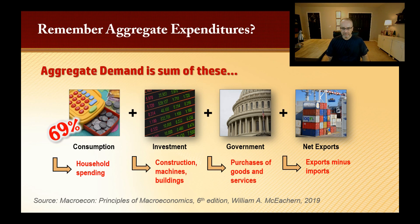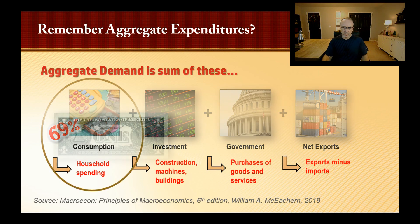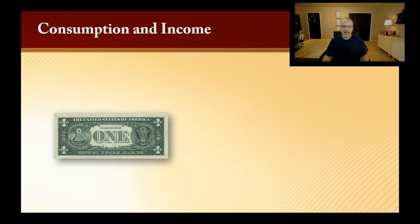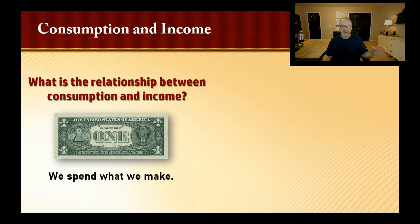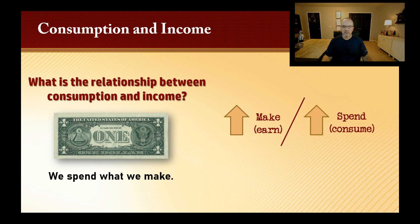We want to focus on consumption — household consumption — because it makes up 69 percent of aggregate demand. The relationship between consumption and income is straightforward: we spend what we make. If I make more money I tend to spend more; if I make less I tend to spend less. That's the consumption-income relationship.